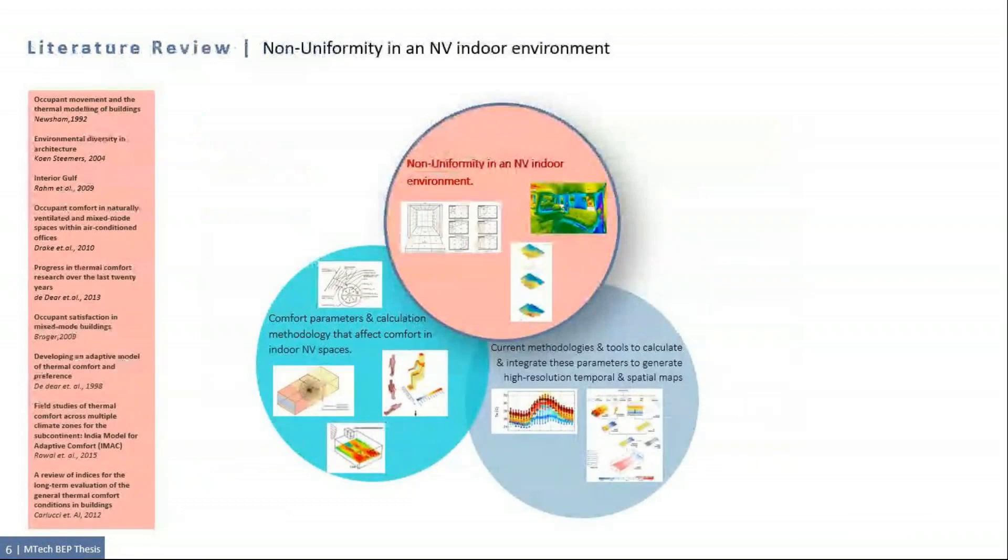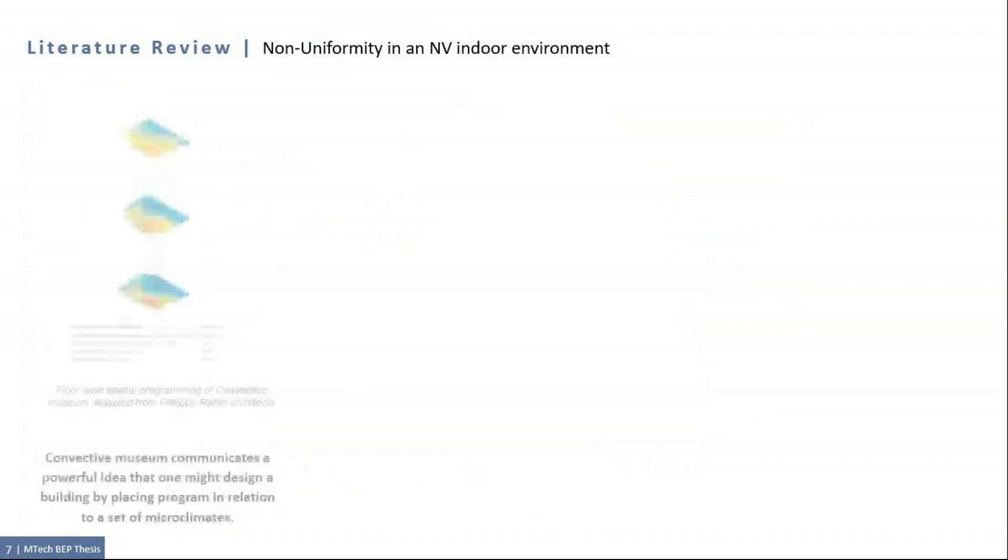So with this background and hypothesis, a literature review was conducted to understand more about the non-uniformity in an indoor environment. Convective Museum is one of hypothetical projects of Philip Rahm. The museum is defined by two poles of heat at 16 and 23 degrees Celsius as per the requirements of the program. Convective Museum communicates a powerful idea that one might design a building by placing a program in relation to the set of microclimates.